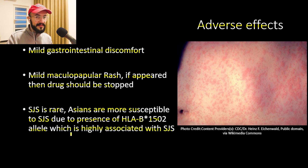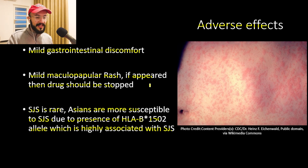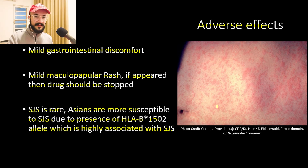The HLA-B*1502 allele is highly associated with Stevens-Johnson syndrome. So it is very important that if the patient is Asian, we test for this allele. If they have it, we do not give them the drug because of the high risk for Stevens-Johnson syndrome. This picture here is an example of the maculopapular rash.